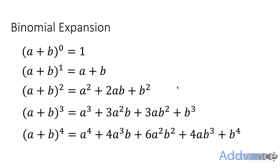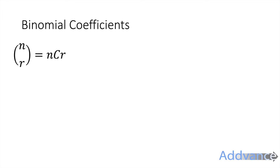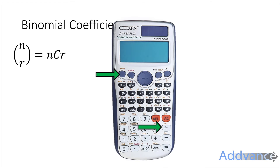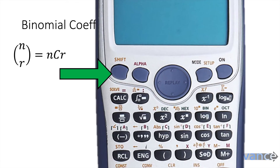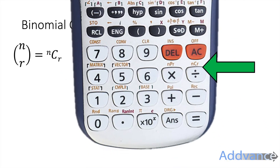Expanding brackets one by one can take a lot of time, but using binomial expansion we can simplify things and it is quicker. Before we continue, we need to know our binomial coefficients. To get these on the calculator, press Shift first, and then nCr — which is the divide button.